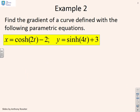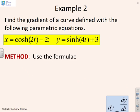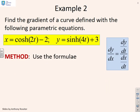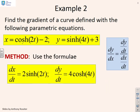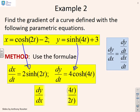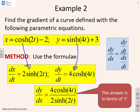Example two: find the gradient of a curve defined by parametric equations. Again we use dy/dx = (dy/dt) / (dx/dt). Here dx/dt equals 2 sinh(2t) and dy/dt equals 4 cosh(4t). Plugging into the formula gives dy/dx equals 4 cosh(4t) over 2 sinh(2t). Again, the answer is expressed in terms of t.